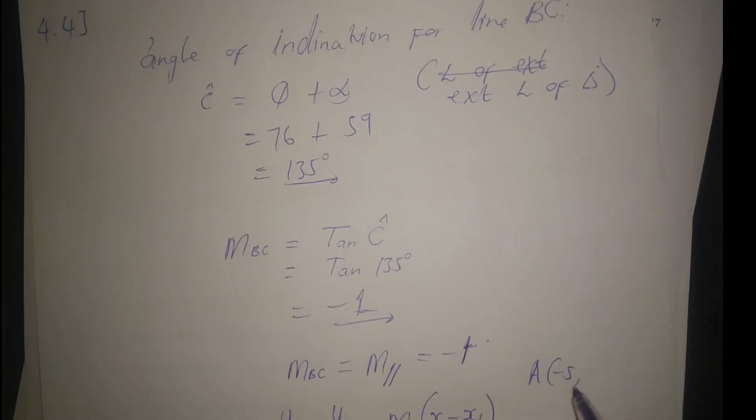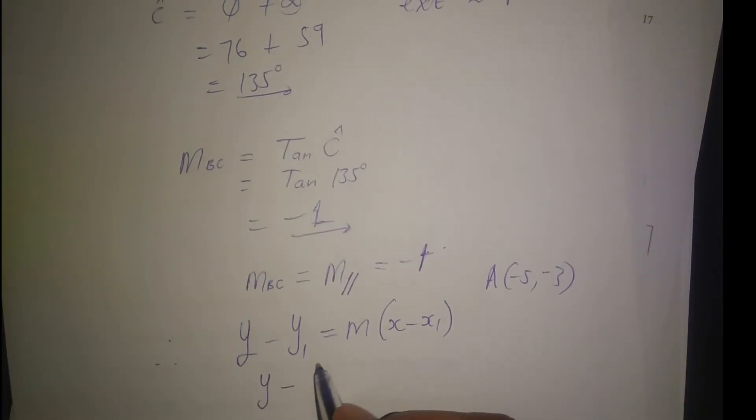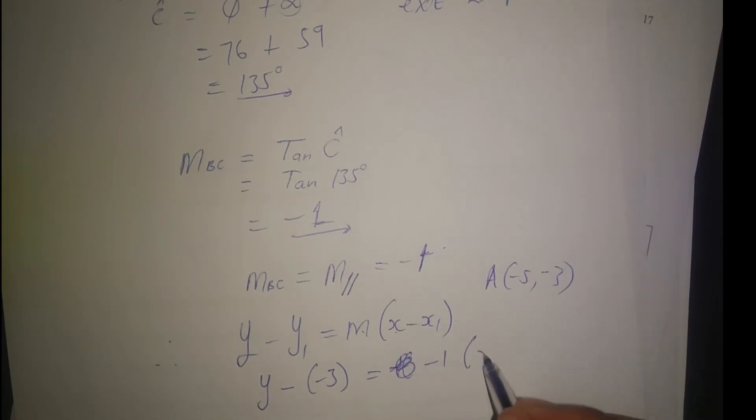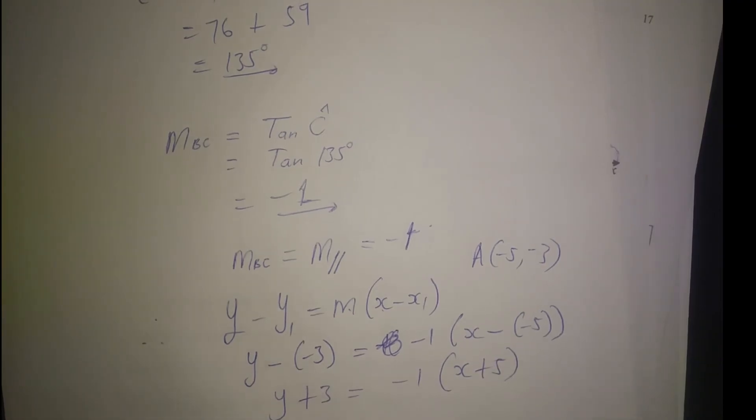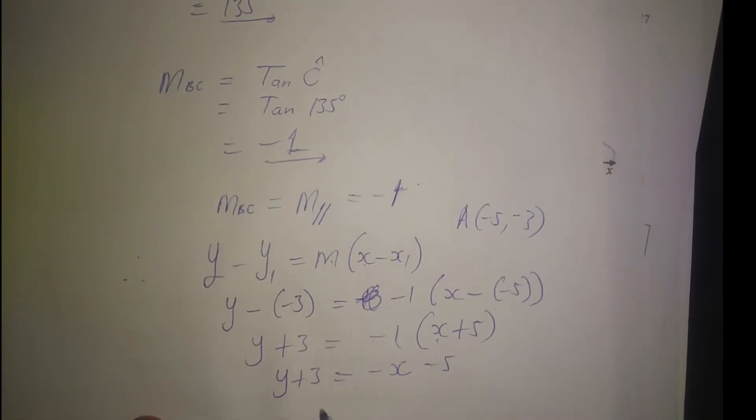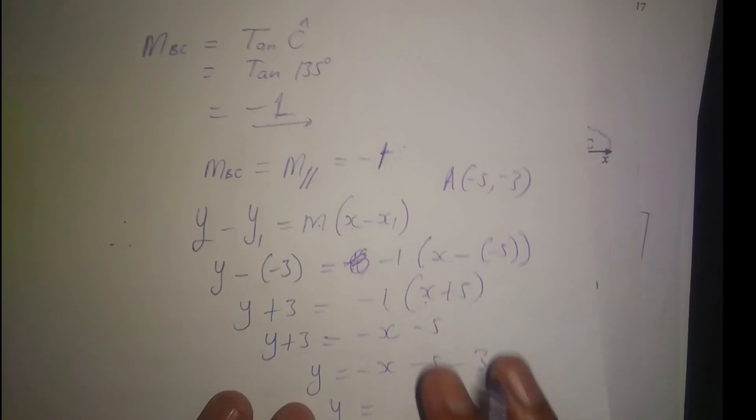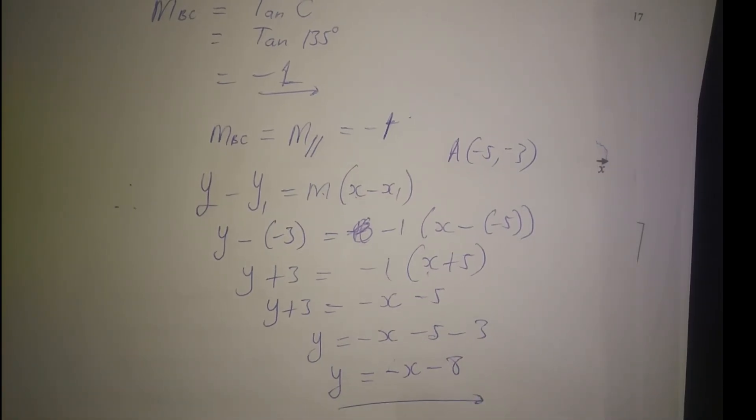The equation of line A which is parallel to BC: gradient BC equals -1. The coordinates of A are (-5, -3). So y minus (-3) equals -1 times (x minus (-5)). That's y plus 3 equals -1 times (x plus 5), which gives y plus 3 equals -x minus 5. Therefore y equals -x minus 5 minus 3, which is y equals -x minus 8. This is our final answer.